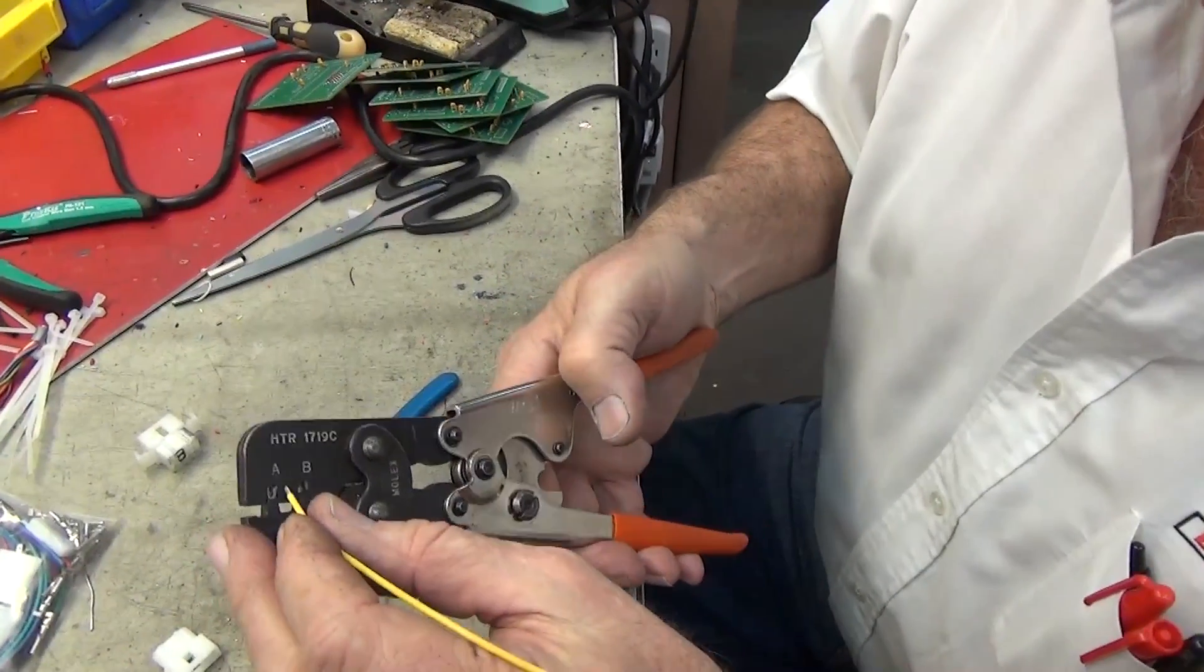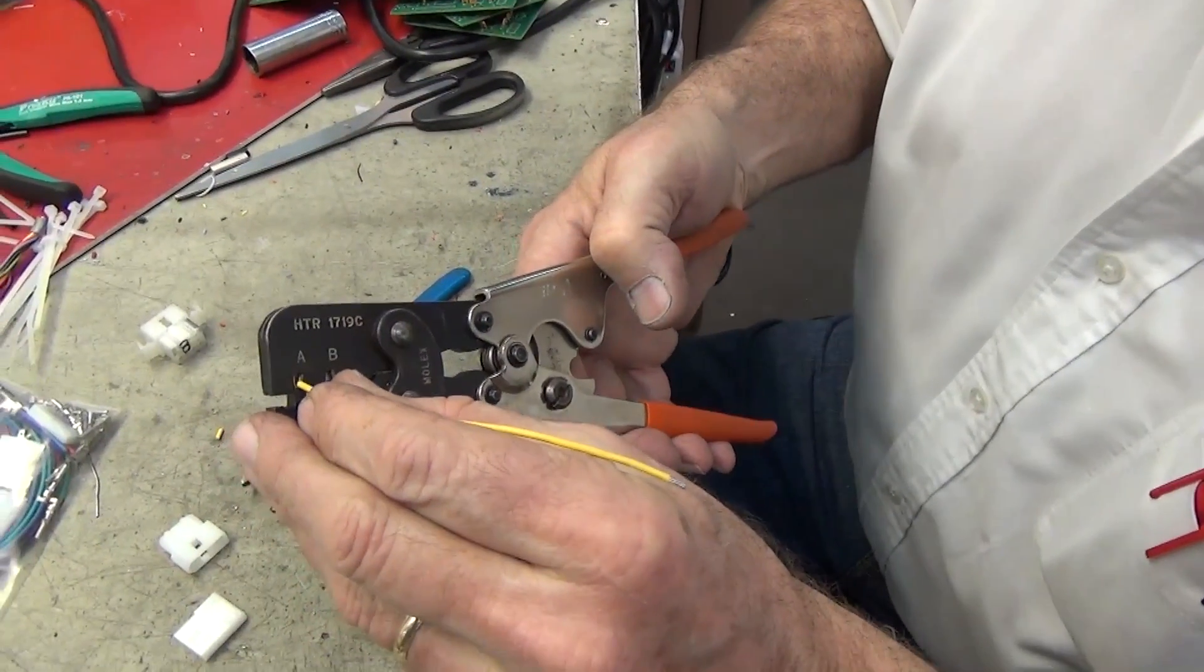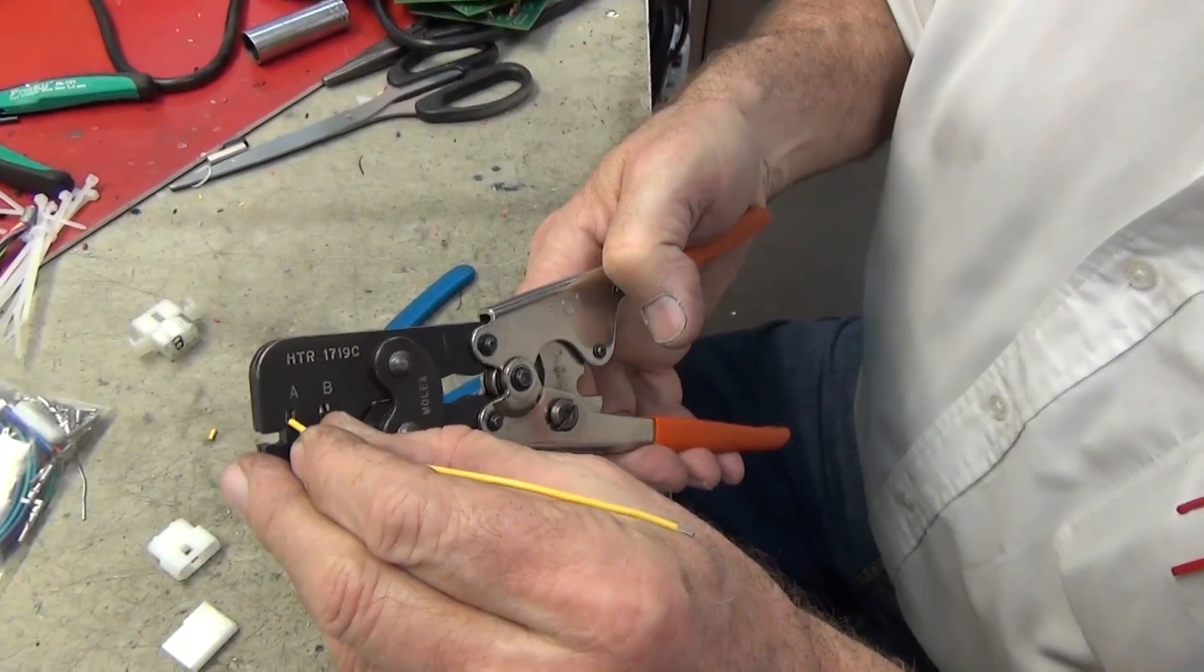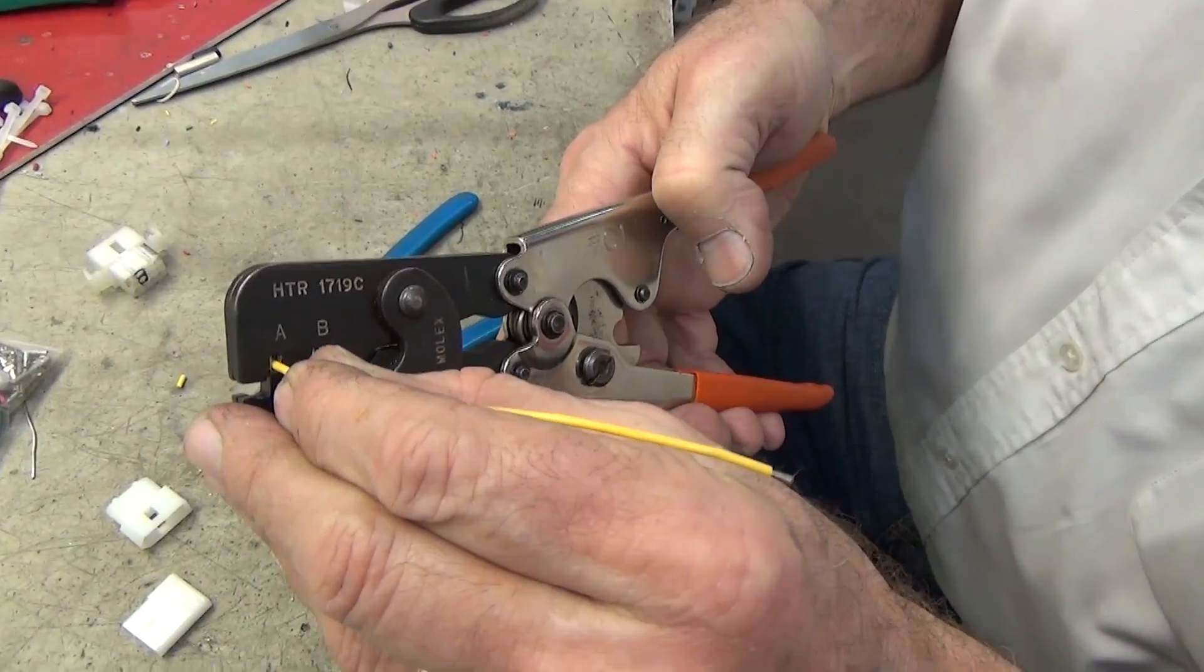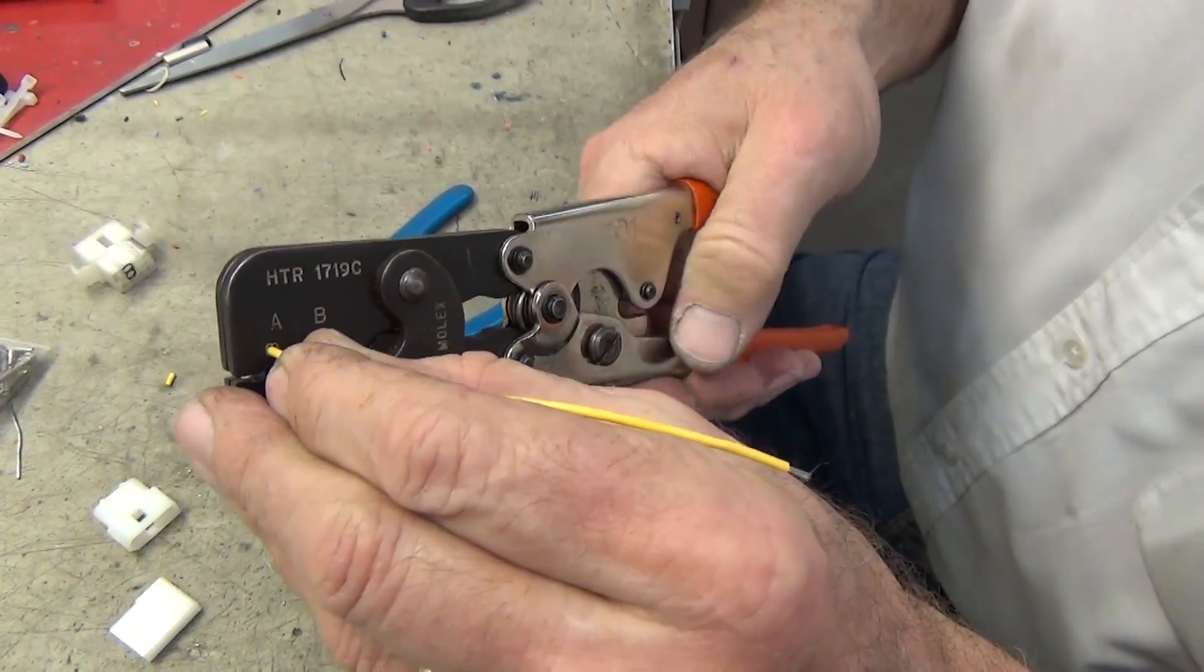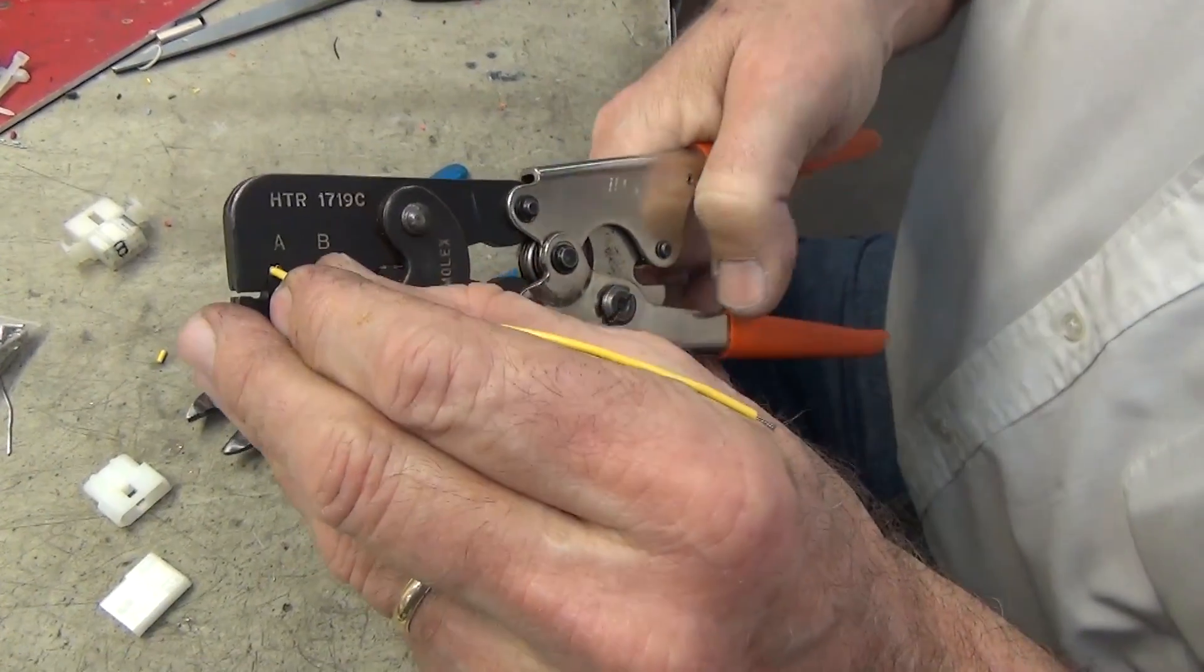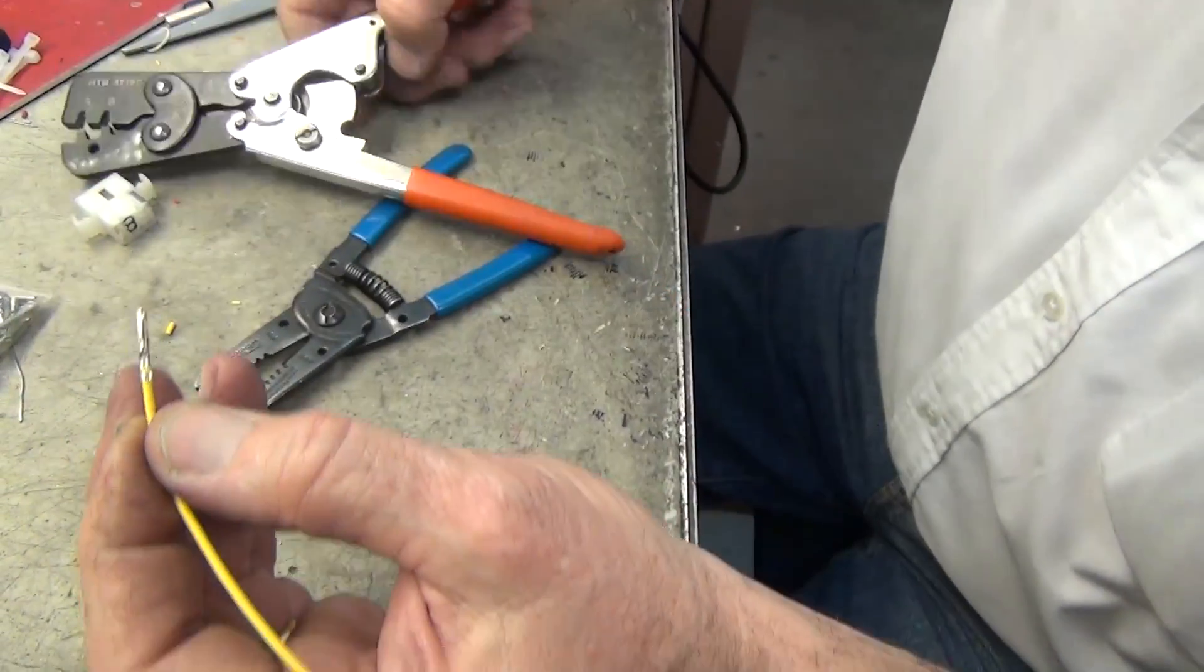You're going to take this wire and slide it in. You can see right now I'm at the insulation—if I go just another eighth of an inch in, it's real easy to get it near perfect.